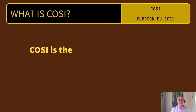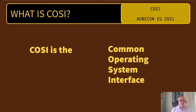Let's start at the very beginning and define what Cozy is. Cozy is an acronym for the Common Operating System Interface, and what it concerns itself with is the configuration of the nodes that run in a Kubernetes cluster. Whenever you provision a new cluster, first you provision the nodes, whether they're bare metal or VM, and then you actually have to configure those nodes for things like networking, disk, any processes that you want to run, and installing the Kubernetes software. That's what Cozy concerns itself with.